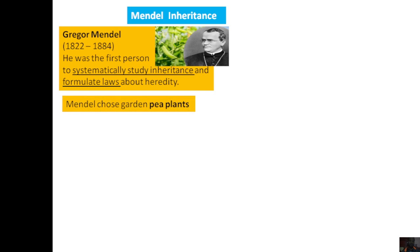So how did Mendel explain the law of inheritance experimentally? In order to do this experiment, he chose the pea plant, or the garden pea plant. Why choose this pea plant? Because it has a lot of advantages over other plants. For example, the pea plant has a short generation time — it grows quickly within three months — and is easily accessible and cheap. Also, pea plants are self-pollinated plants; they have both a male part and a female part, so they can self-pollinate and also be controlled and cross-pollinated.